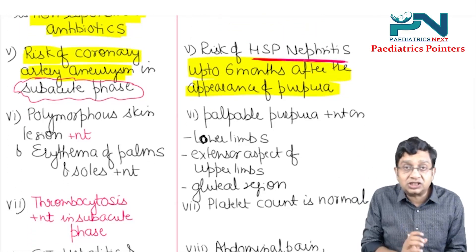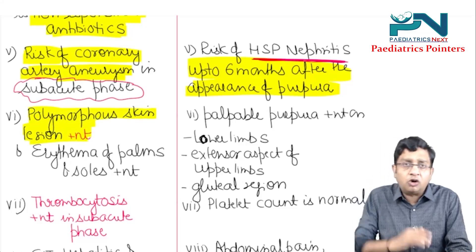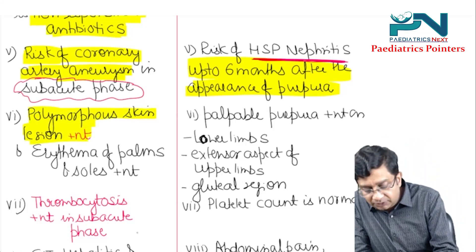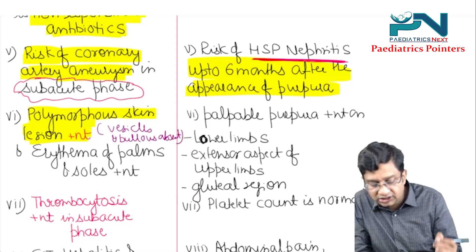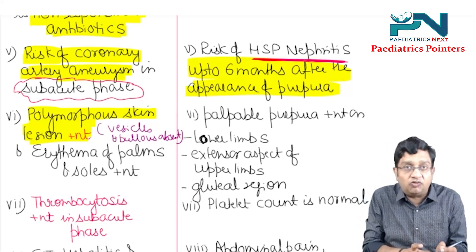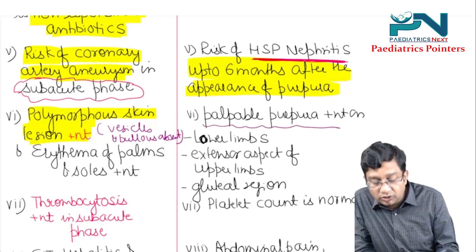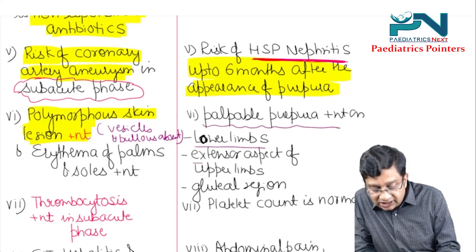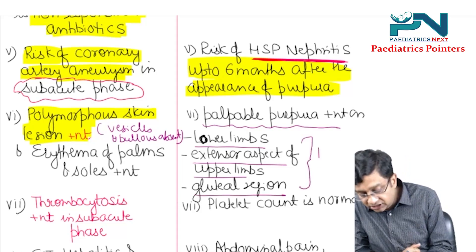In Kawasaki disease, there is a polymorphous skin lesion present all over the body. Vesicles and bullous lesions are absent, and there can even be erythema of the palms and soles. In HSP, there is palpable purpura present on the lower limbs, extensor aspect of the upper limbs, and the gluteal region — these are the pressure points.